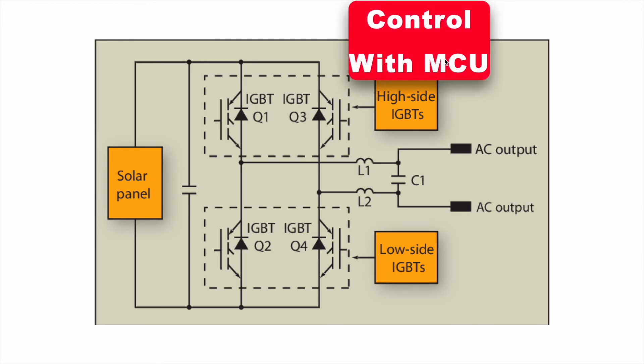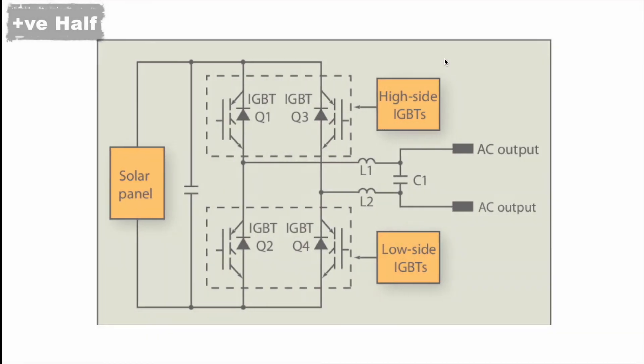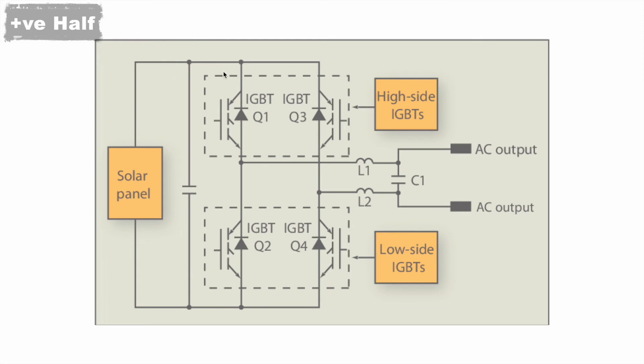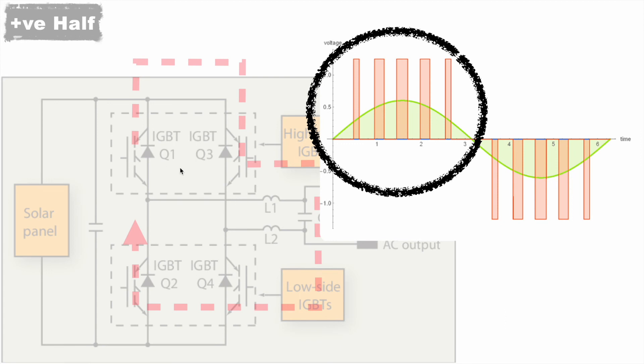Let's see now how can we generate the positive half cycle. For positive half cycle, we have to control Q1 and Q4, and the current will flow like this. And this time, Q3 and Q2 are in off condition. With the help of microcontroller, we can easily control these IGBTs. And by turning on and off Q1 and Q4, we can have this kind of output.